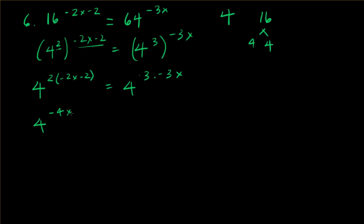Negative 4x minus 4 equals 4 times negative 9x. Now the bases are the same, we can set them equal to each other.